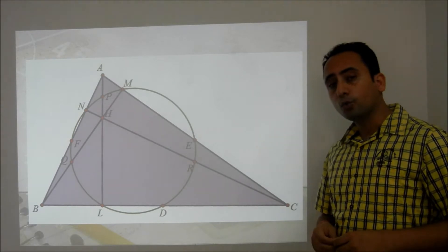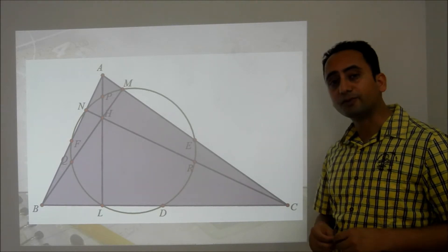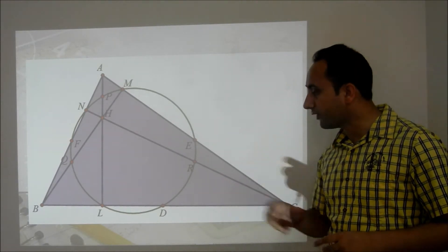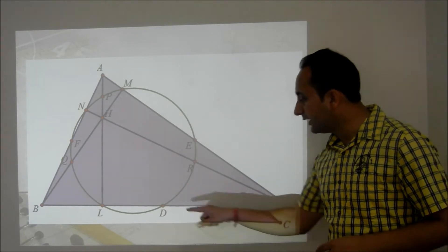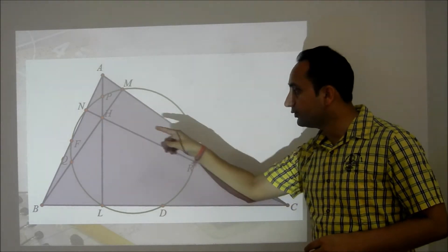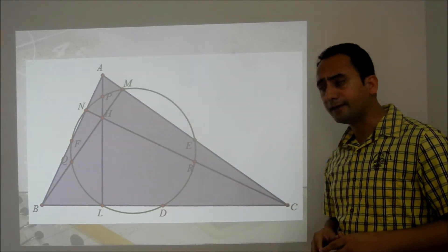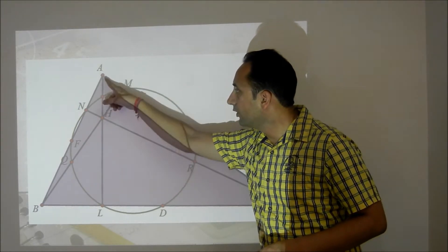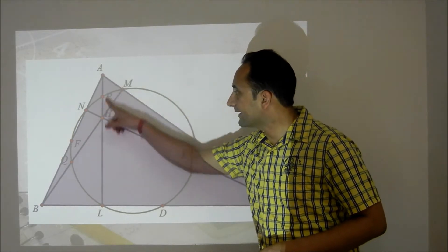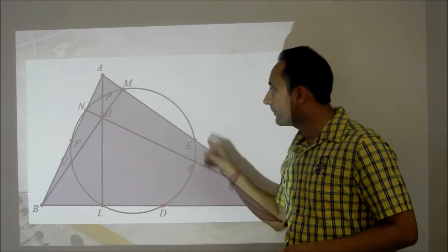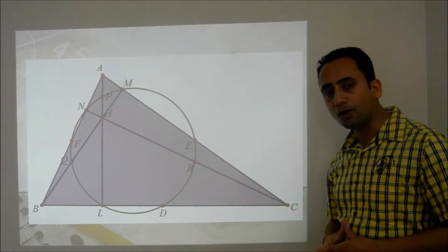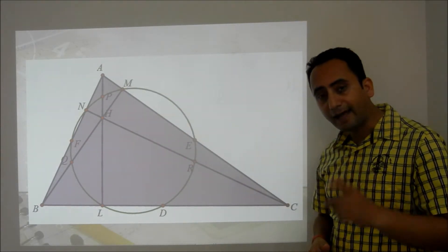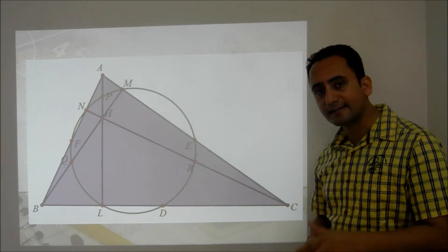A circle which passes through the feet of altitudes of a triangle, the midpoints of 3 sides, and the midpoints of segments joining each vertex to the orthocenter — the circle which passes through all these 9 points is known as a 9-point circle.